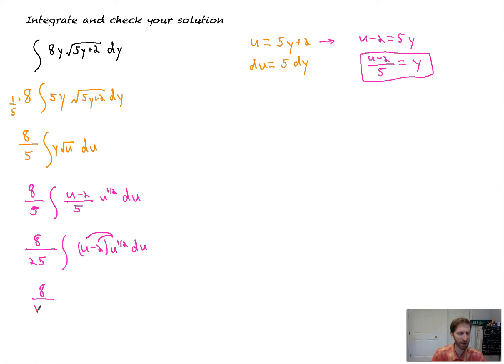Oh, it's beautiful. I love the manipulation here. 8 over 25 times the indefinite integral, u to the 1 half times u to the first, you'd add exponents, is u to the 3 halves, minus 2u to the 1 half. So, it's going to be minus 2u to the 1 half.